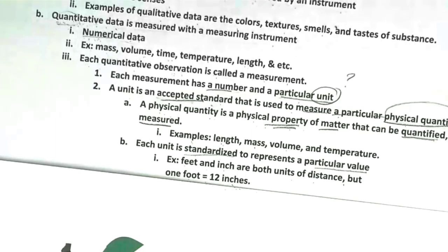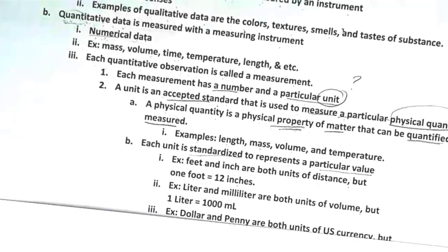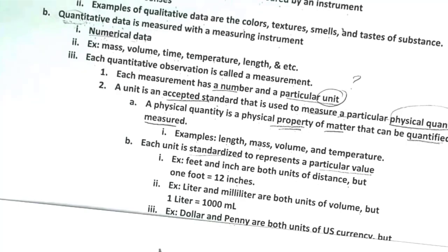As we can see, each unit represents a specific value, even when they are used to measure the same physical quantity. Other examples of units are liters and milliliter. Both units are used to measure volume of the substance. However, one liter is a lot more than one milliliter because one liter is equal to one thousand milliliter.